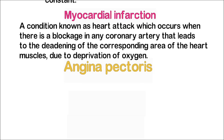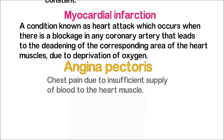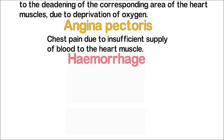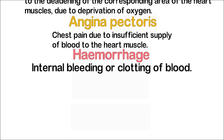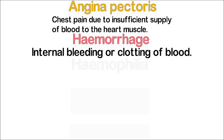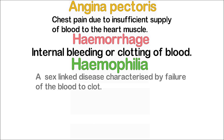Angina pectoris is chest pain due to insufficient supply of blood to the heart muscle. Hemorrhage is known as internal bleeding or clotting of blood. Haemophilia is a sex-linked disease characterized by failure of the blood to clot. As it is genetic, it cannot be cured, and it is also known as bleeder's disease.